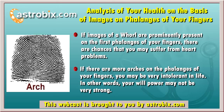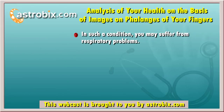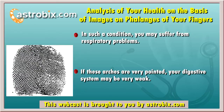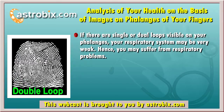In fact, you will be intolerant in life. Usually, if there are a lot of arches on your phalanges, you may even suffer from respiratory disorders. If these arches on your phalanges are pointed, your digestive system may be very weak and you may suffer from digestive problems. If single or dual loops are clearly visible on the phalanges of your fingers, you may suffer from respiratory problems.